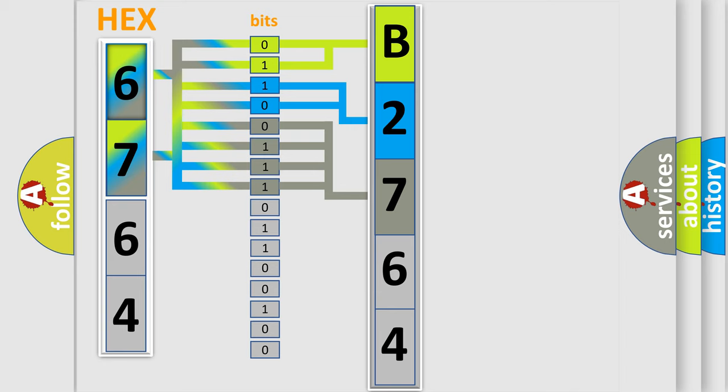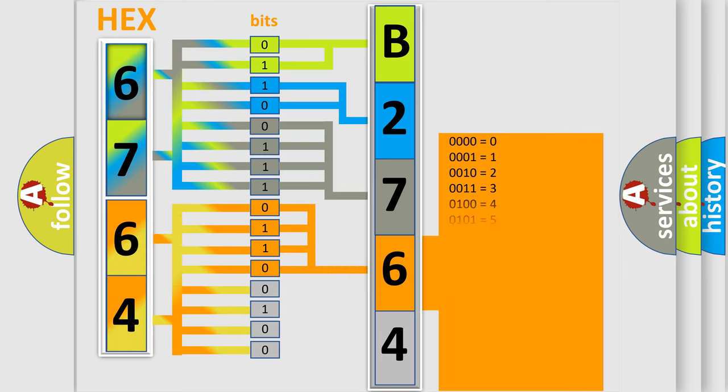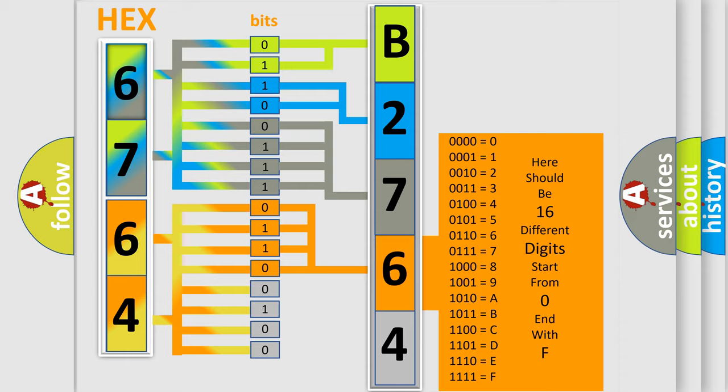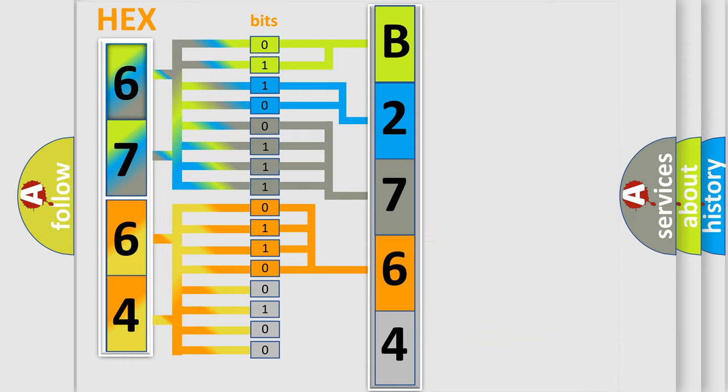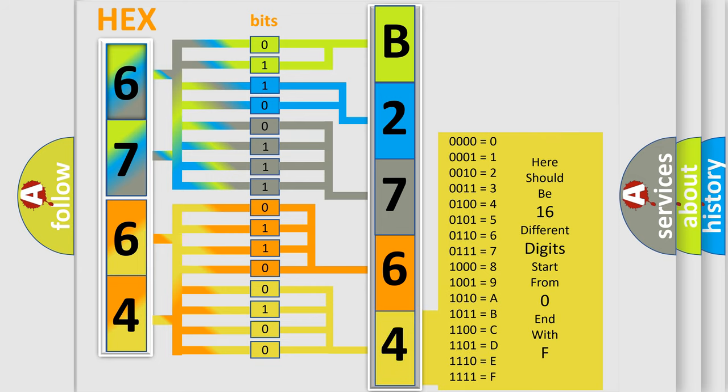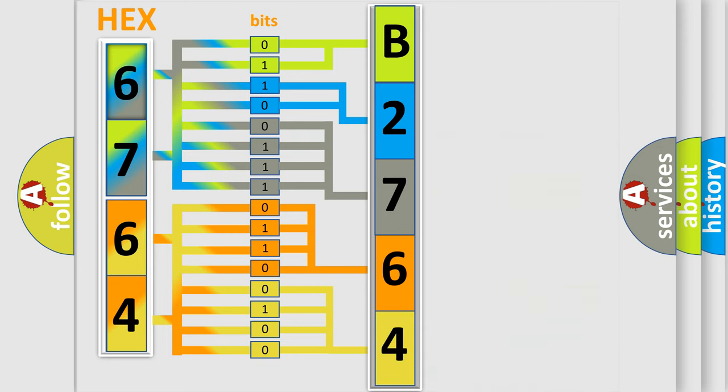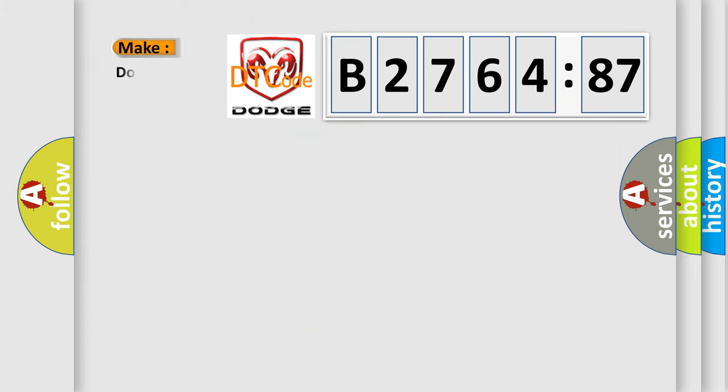The second byte is composed of a combination of eight bits. The first four bits determine the fourth character of the code, and the combination of the last four bits defines the fifth character. A single byte conceals 256 possible combinations. We now know in what way the diagnostic tool translates the received information into a more comprehensible format.